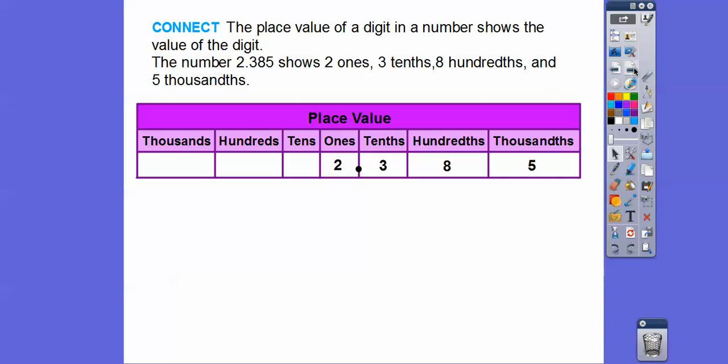So remember, the place value of a digit in a number shows the value of its digits. So for example, 2.385, I've written that right here, 2.385.